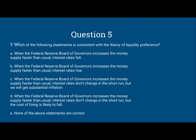A. When the Federal Reserve Board of Governors increases the money supply faster than usual, interest rates will fall. B. When the Federal Reserve Board of Governors increases the money supply faster than usual, interest rates will rise. C. When the Federal Reserve Board of Governors increases the money supply faster than usual, interest rates don't change in the short run, but we will get substantial inflation.